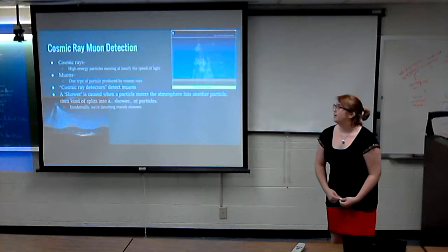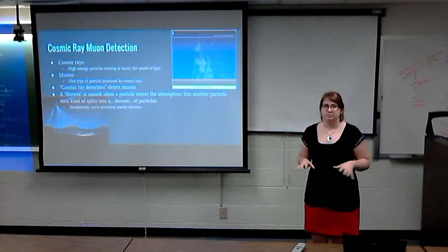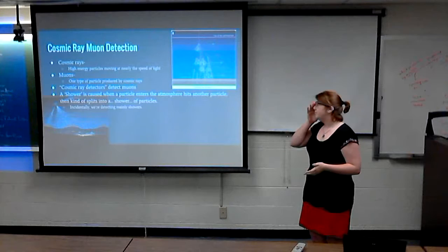Muons are one type of particle produced by cosmic rays. It's basically the only particle that can get through all the atmosphere to be detected at sea level. The cosmic ray detector I'm working with detects muons specifically. A shower is caused when a particle enters the atmosphere, hits another particle, and becomes a shower of particles. We are mainly detecting showers.